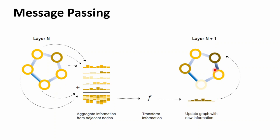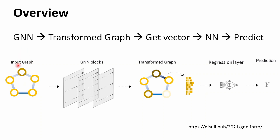The overall pipeline is: an input graph goes through graph neural network blocks where message passing happens, producing a transformed graph where each node has updated information. We then extract that information — for example by concatenating atomic features — and generate a vector that passes through a regression or prediction layer to give the final prediction. This is a short overview of how a GNN model is trained, and next we'll see how to implement it in Python.